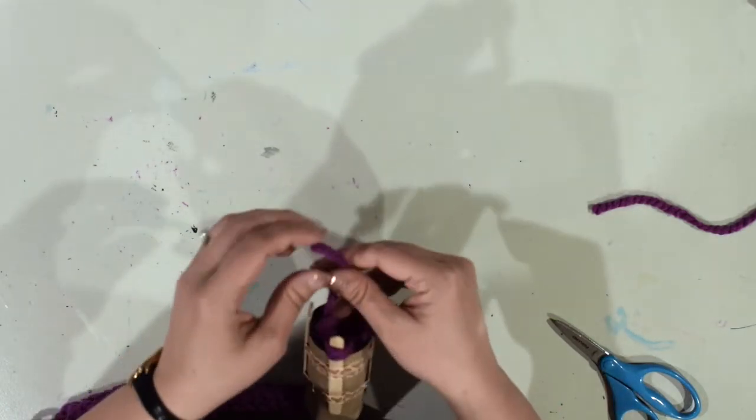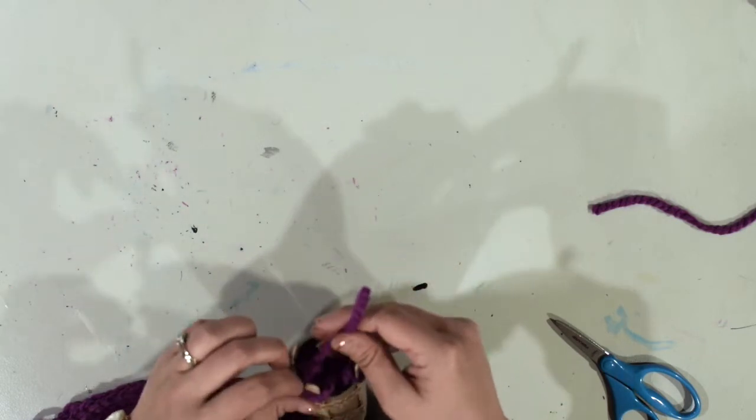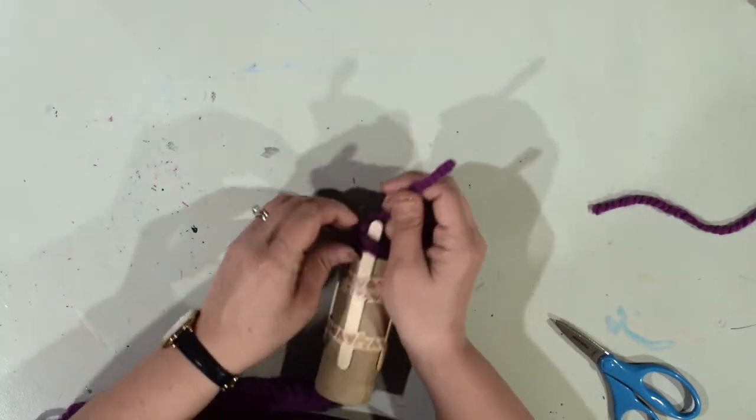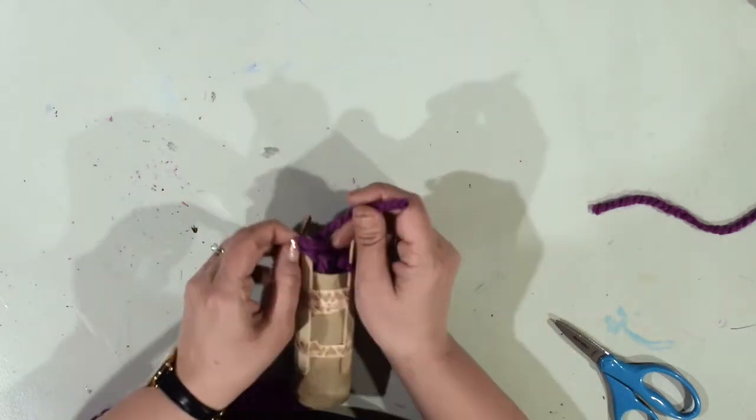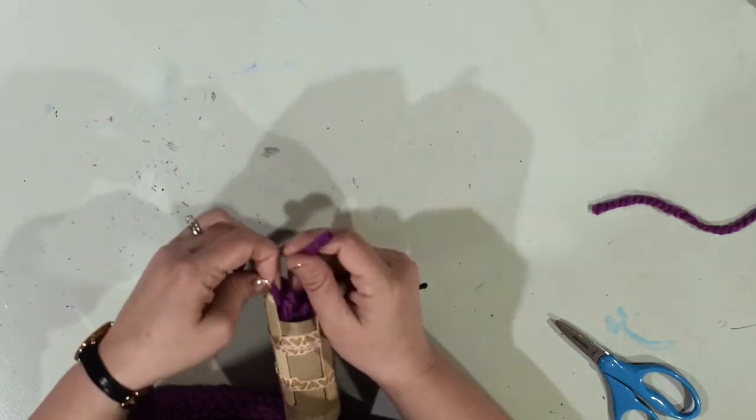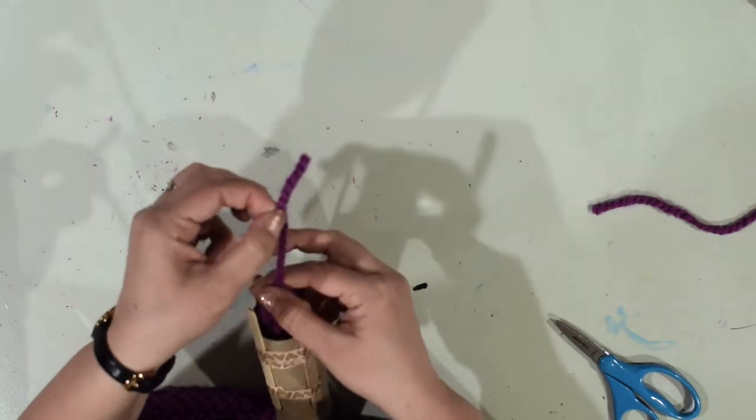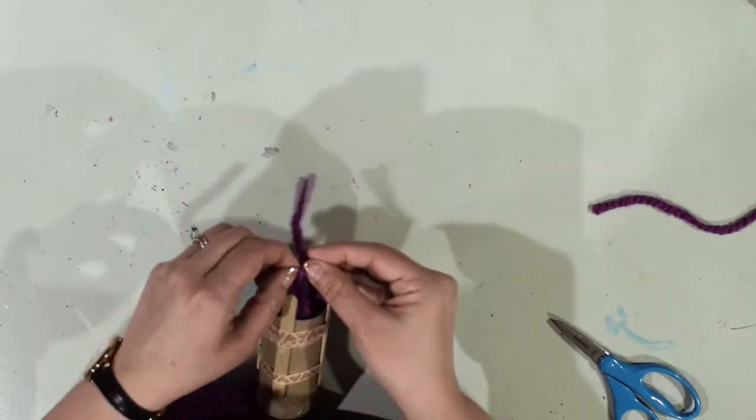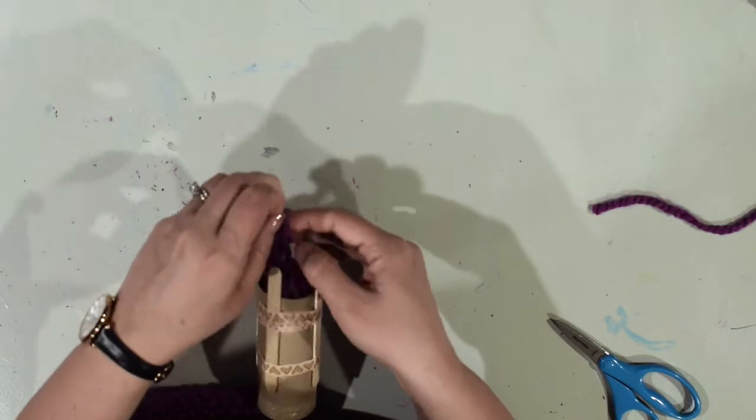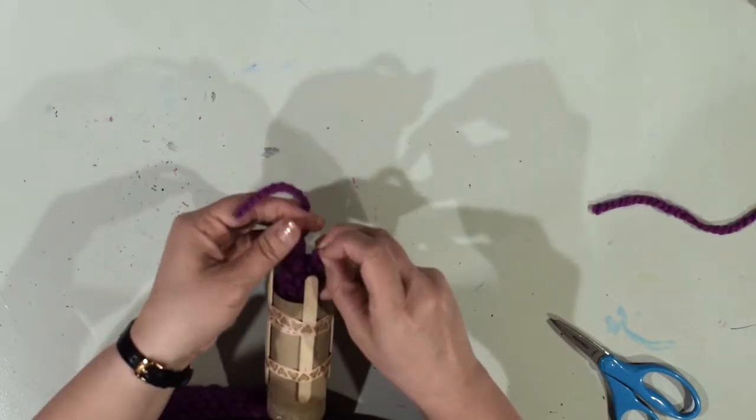Now I like to do this one loop at a time because it can be a little tricky, and if you try to do all the loops at once sometimes they come off. Sometimes they'll all come off at once and that might get a little bit tough to do when they're all coming through at one time. And last one.